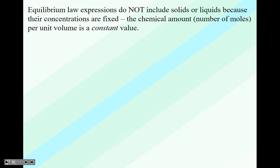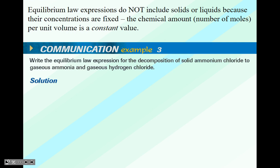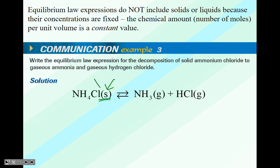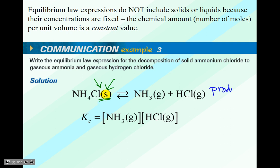Equilibrium law expressions do not include solids or liquids because their concentrations are fixed — the number of moles per unit volume is a constant value. For example: write the equilibrium law expression for the decomposition of solid ammonium chloride to gaseous ammonia and gaseous hydrogen chloride. The solid reactant does not belong in the equilibrium constant expression. So you only write down the products part — technically it's over 1, but you just write the products and you're done.